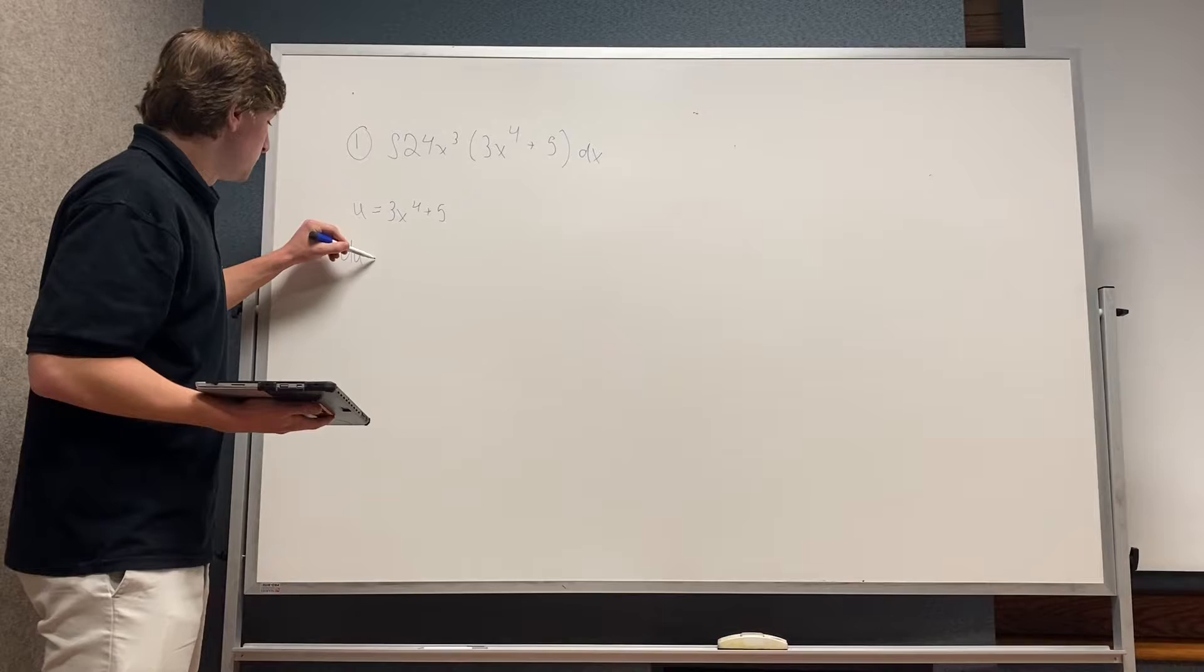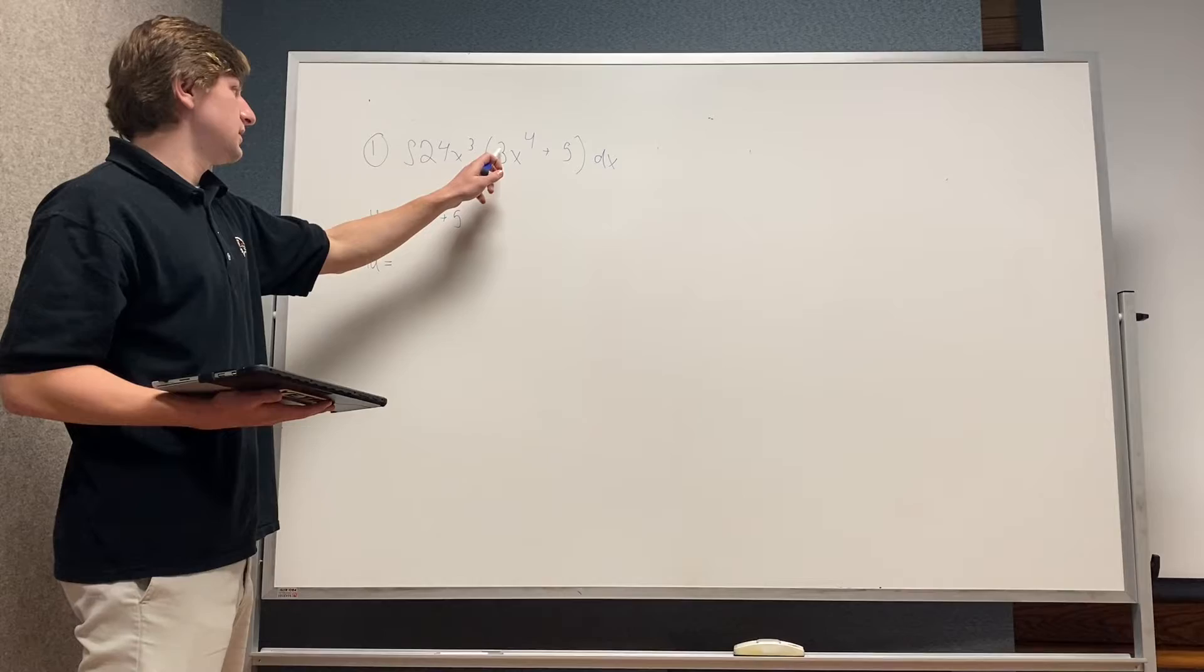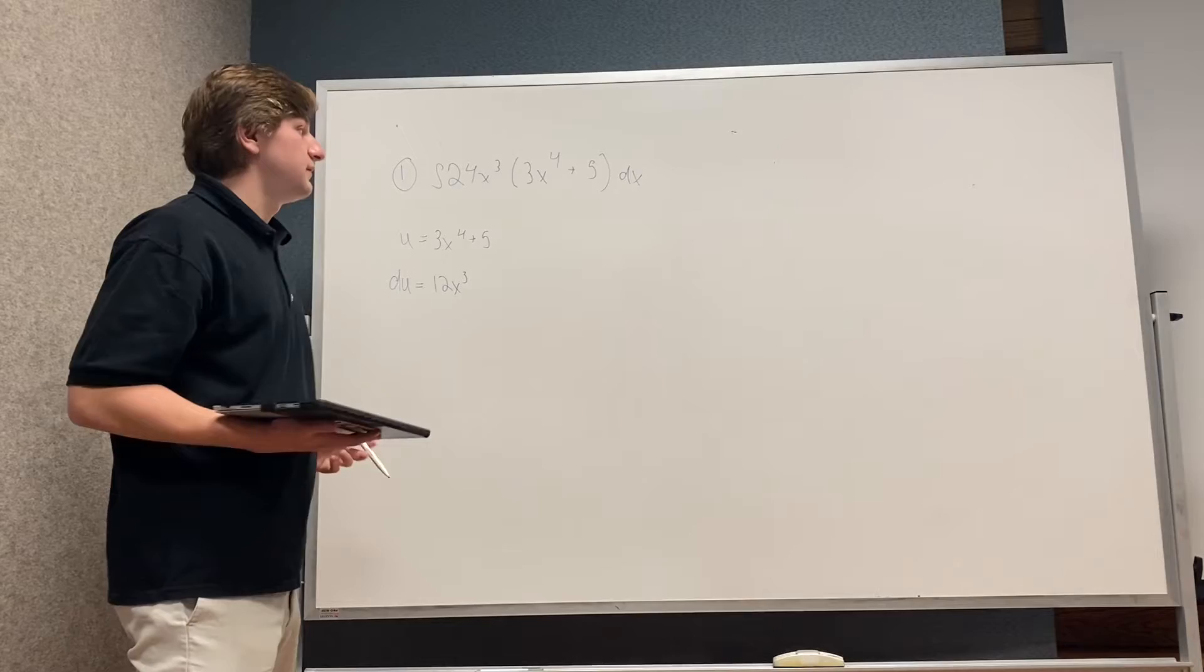So first you take 3 times 4, which is 12x, and then subtract 1 from the 4, so you get 12x to the 3rd. The derivative of 5 is just 0.